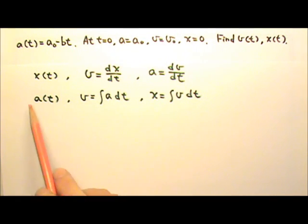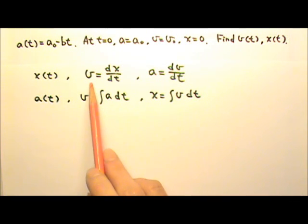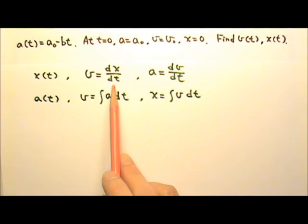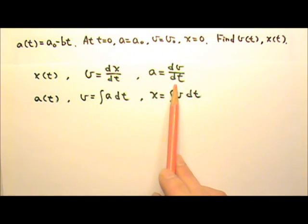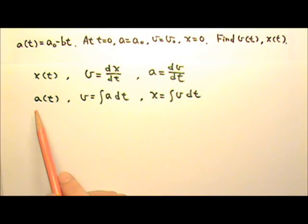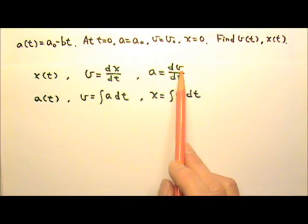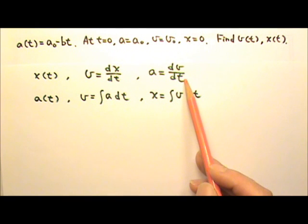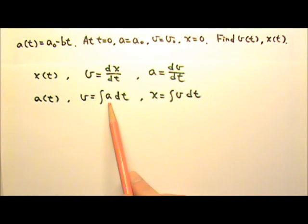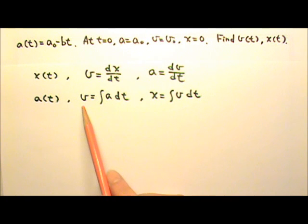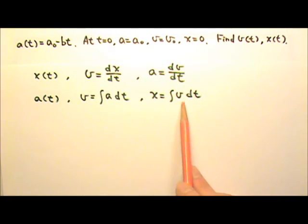We have done problems with position as a function of time given. To find velocity, we take the time derivative of x. To find acceleration, we take the time derivative again. Now we are given the acceleration as a function of time. To find the velocity, we have to do the reverse operation of the derivative, which is integration. So we integrate a dt to get velocity, and to find position as a function of time, we integrate v dt.